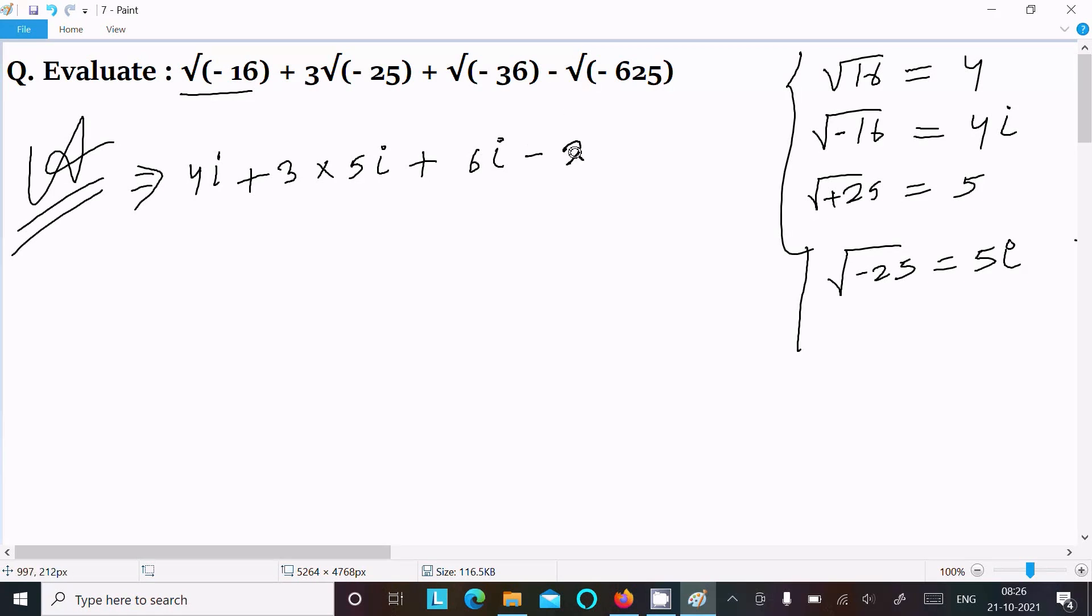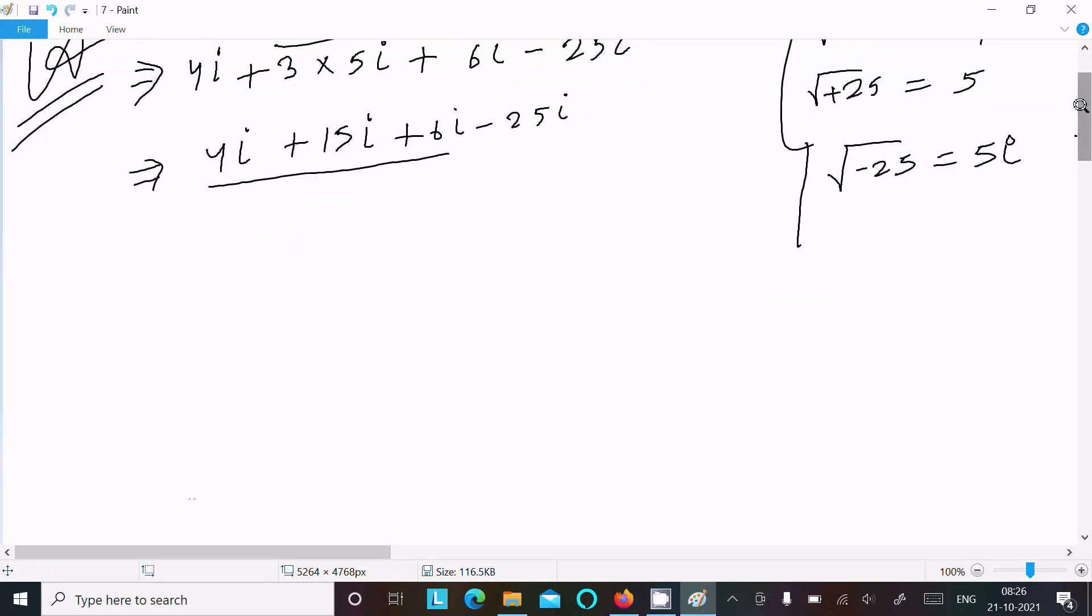This is 25i. First, let's multiply: 3 into 5 is 15i. Then we have 6i minus 25i. Adding first: 15 plus 6 is 21, 21 plus 4...